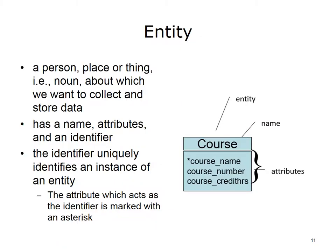In ERD Crow's Foot notation, an entity is represented by a two-part box: the top section holds the entity name and the bottom section lists the attributes. An entity has a name, attributes, and an identifier that uniquely identifies instances of the entity. Unique identifiers are similar to social security numbers — each number is distinct and assigned to one and only one person. An attribute that acts as the unique identifier is either added to the entity or selected from attributes capable of serving as a unique identifier.